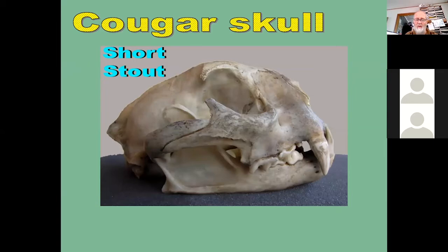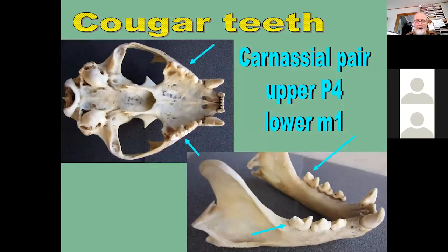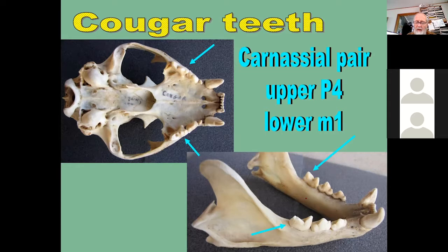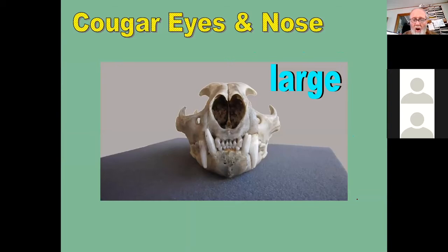The cougar skull is short, stout, and solid. The carnassial pair of teeth is designed for chewing and eating, while the canines up front are for grabbing, holding, and puncturing. The carnassial pair consists of upper premolar four and lower molar one — they come together like scissors blades to cut. Earlier speakers mentioned how cats use them to cut hair and skin when getting into a carcass. The eye sockets are large, and the nose is large. Cougars are excellent smellers — they put a lot of faith in what they can smell.